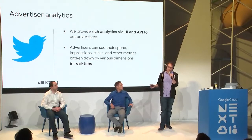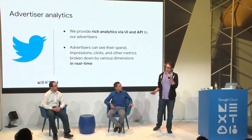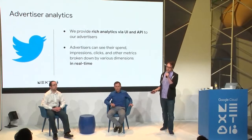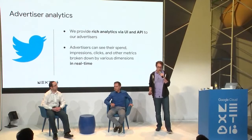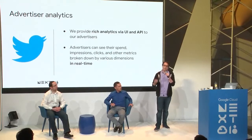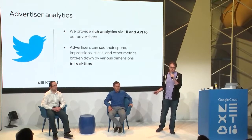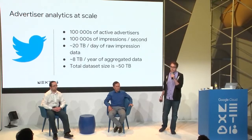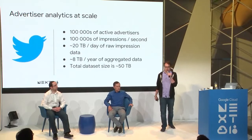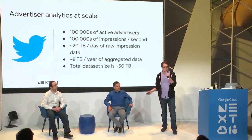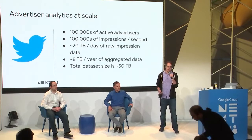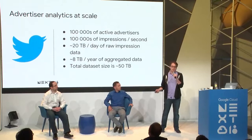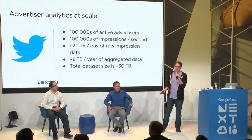Our advertiser analytics product provides advertisers with information on how their ads and campaigns are performing. They can see things like spend breakdown, impressions, clicks — all these metrics in real time through UIs we provide, and also APIs for our more advanced advertisers. The scale is pretty large: hundreds of thousands of active advertisers running lots of campaigns, generating hundreds of thousands of events per second from client events, web browsers, mobile apps, and internal applications like our ad serving infrastructure.